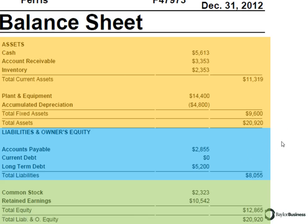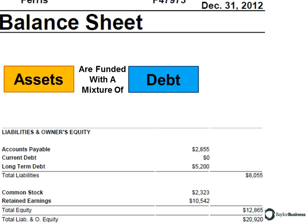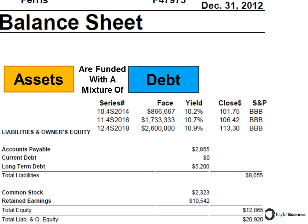We're going to go through it and see what we can learn. We'll tackle the liabilities and owner's equity first because assets are funded with a mixture of debt and equity. Let's see what kind of debt this company brought in to round zero.